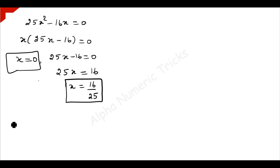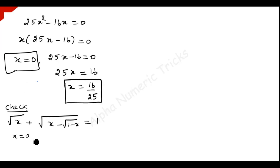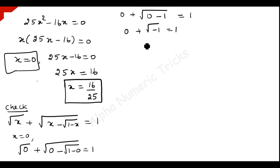Now we have to check these values in our original problem: square root of x plus square root of x minus square root of 1 minus x is equal to 1. Substituting x equals 0: we get 0 plus square root of 0 minus square root of 1, which gives square root of minus 1 equals 1. This is not possible, so x equals 0 is not a solution.